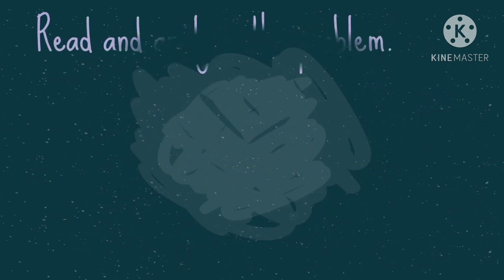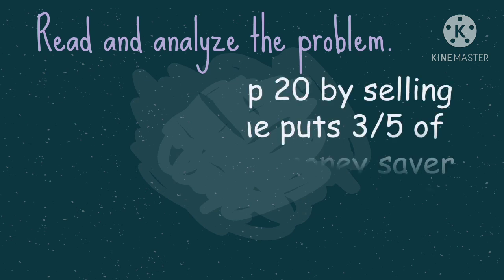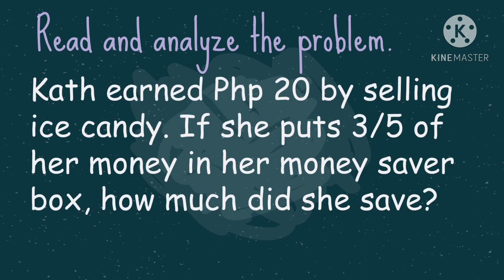Let us read and analyze the problem. Cass earned 20 pesos by selling ice candy. If she puts three-fifths of her money in her money saver box, how much did she save?